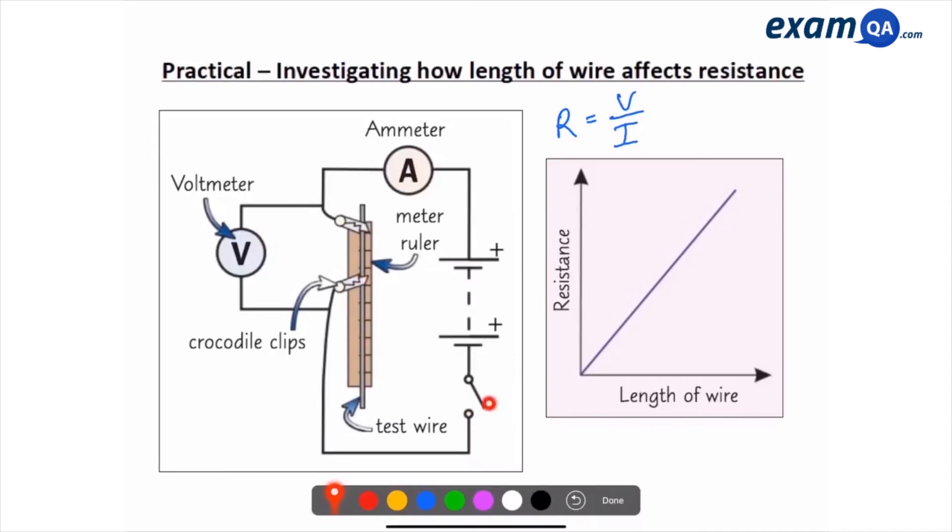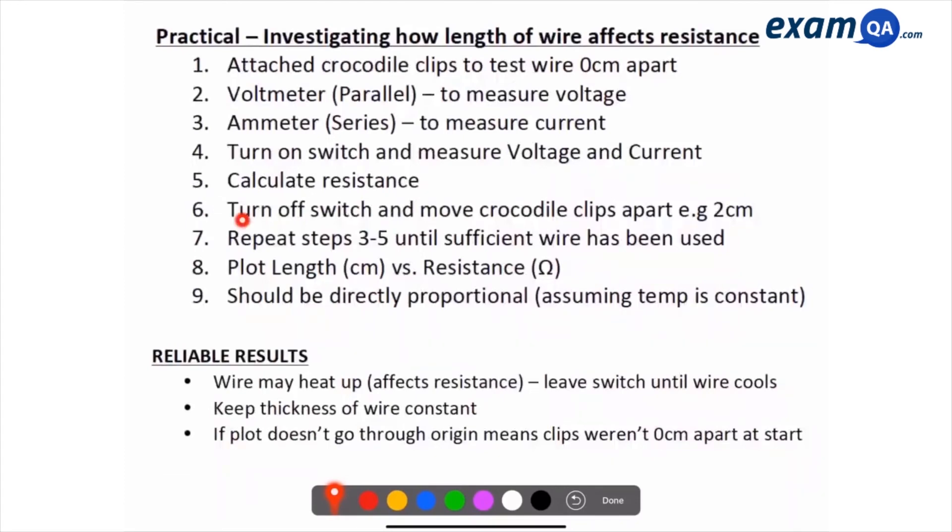Open switch, move back, close switch, measure, calculate R. So you keep doing that. So turn off switch, move crocodile clips, repeat steps until all the wire has been used. And then you're going to plot length of wire versus resistance. And it should be directly proportional.